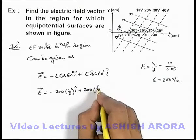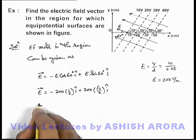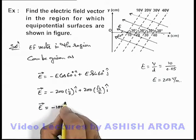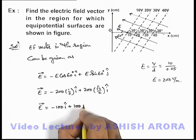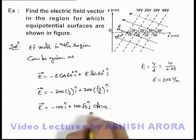Sine 60 we can write as root 3 by 2, j cap. So here the result of electric field vector we can write as minus 100 i cap plus 100 root 3 j cap. That will be the answer to this problem.